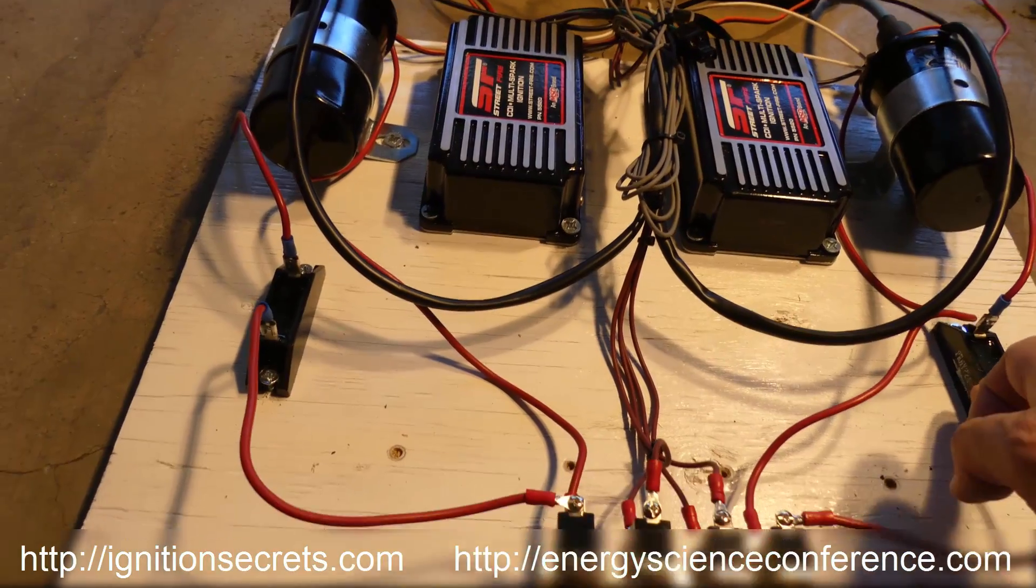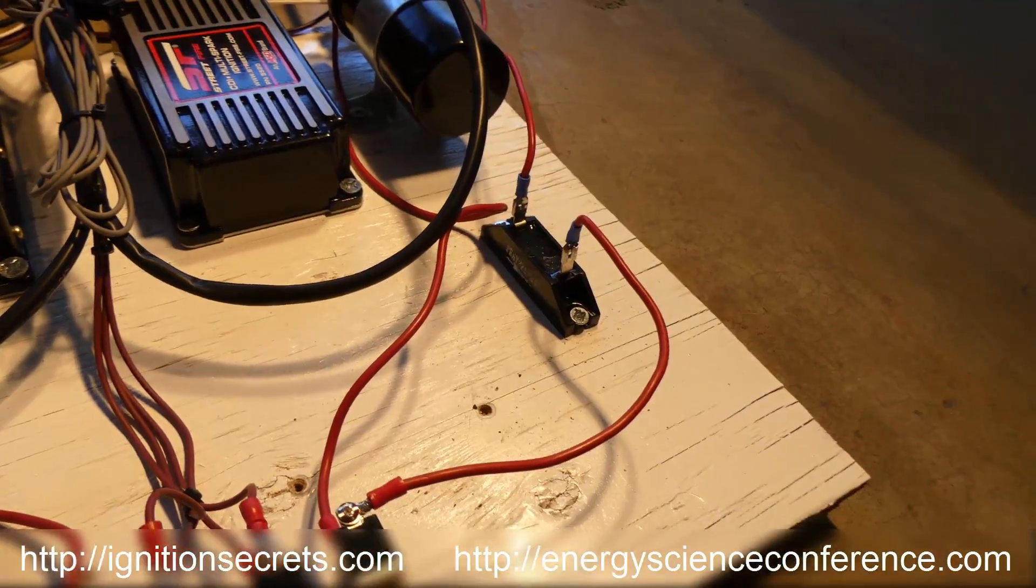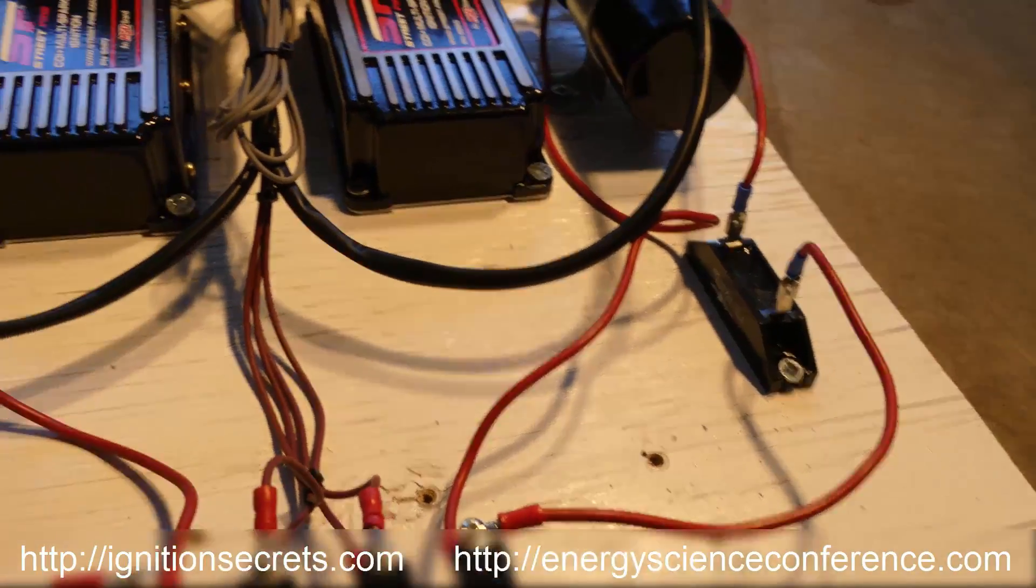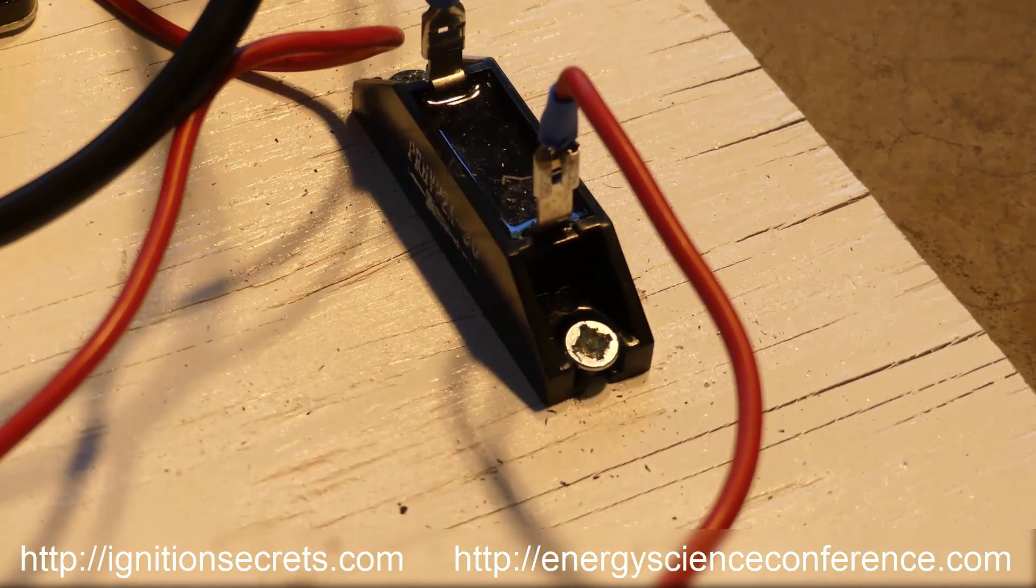These diodes are about 20,000 volts, two amps. These used to be about 25 bucks a piece, but they're now only about a couple bucks a piece on eBay. Those prices are really coming down.